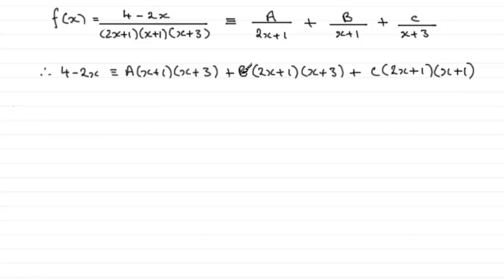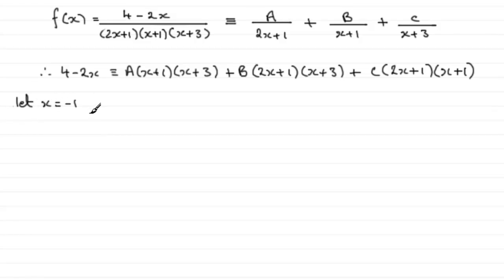To work out the constants A, B, and C, we choose appropriate values of x that eliminate various terms, so we can avoid doing simultaneous equations. One such value is x = -1, which makes the (x+1) bracket equal zero. Substituting x = -1 gives us 4 minus 2 times (-1), which is 4 plus 2 = 6.